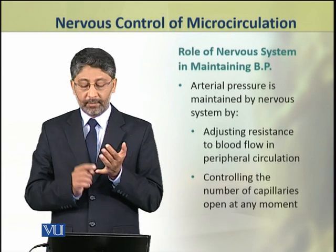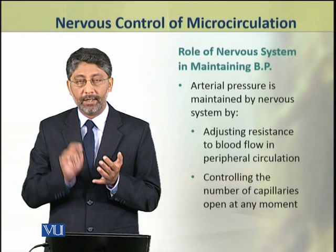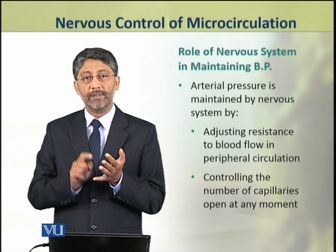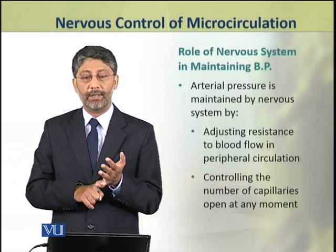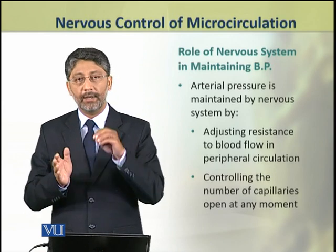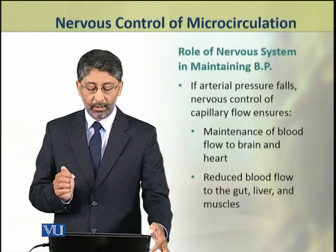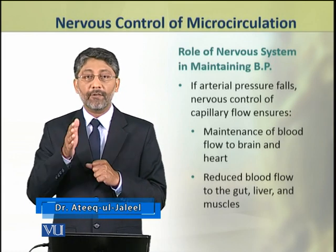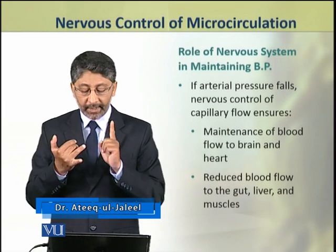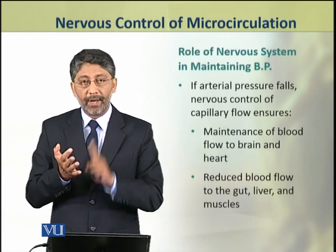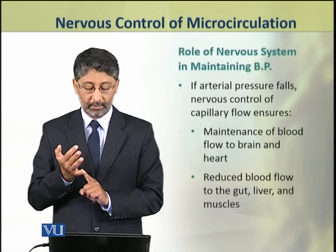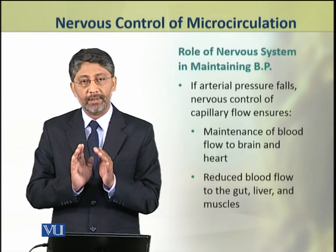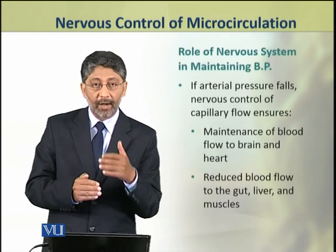The arterial blood pressure is maintained by the nervous system by adjusting the resistance to blood flow in peripheral circulation, and by controlling the number of capillaries open at any moment. If arterial blood pressure falls, nervous control of capillary flow ensures that blood flow to the brain and heart is maintained, and that blood flow to the gut, liver, and muscles is reduced.